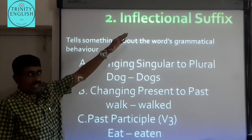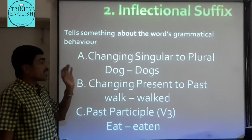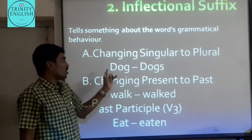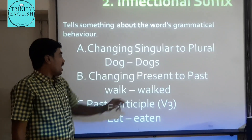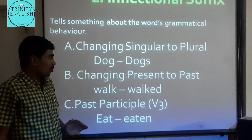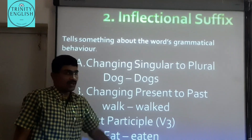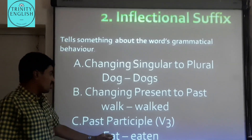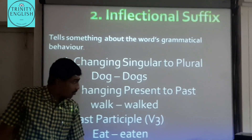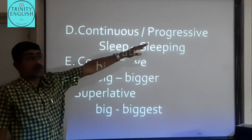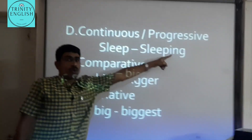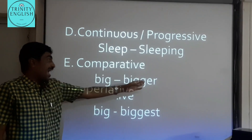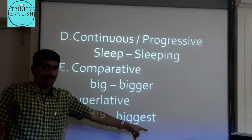Inflectional suffixes indicate the grammatical behavior of words. They include: adding -s for plurals (e.g., 'dog' → 'dogs'); adding -ed for past tense in regular verbs (e.g., 'walk' → 'walked'); the past participle or V3 form (e.g., 'eat' → 'eaten'); adding -ing for the continuous or present participle form; adding -er for comparative degree; and adding -est for superlative degree.